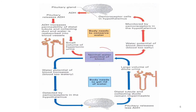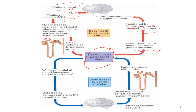From this diagram, when there is a decrement in normal water potential — meaning the blood becomes too salty — it causes the osmolar receptors in the hypothalamus to signal the pituitary gland to release ADH. ADH then causes the permeability of the distal tubule and collecting duct to increase, causing water to be reabsorbed into the blood vessels. At the end, it produces a small volume of hypotonic urine and the normal water potential of blood is restored.